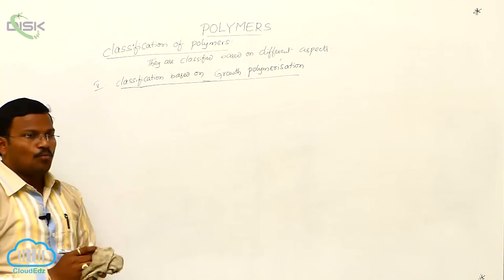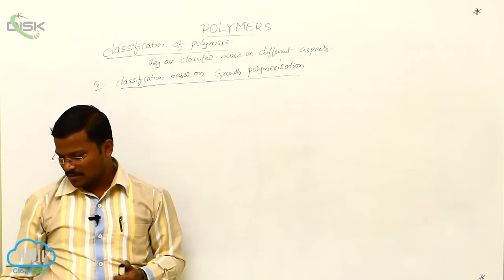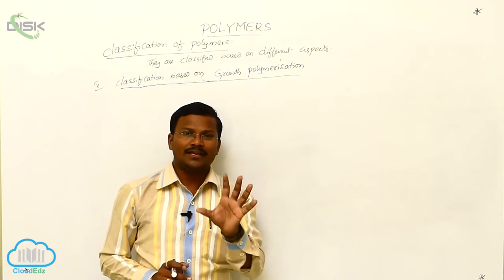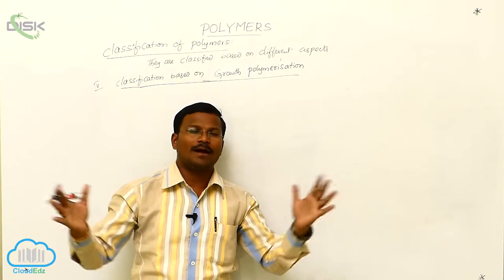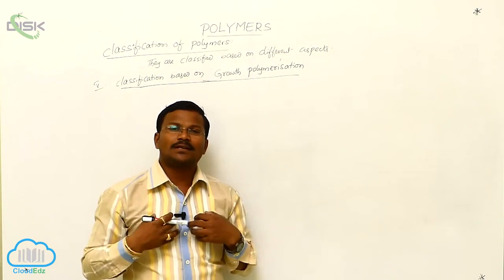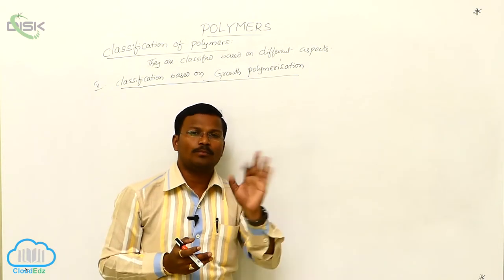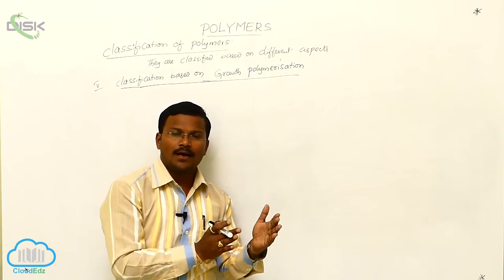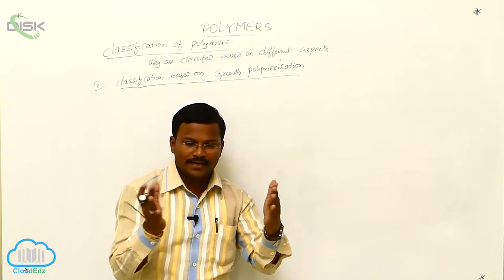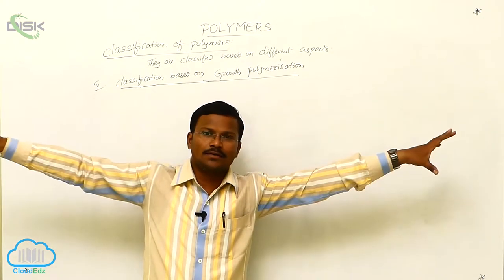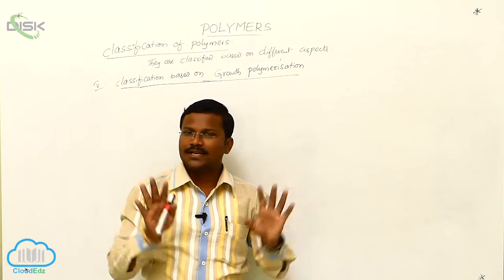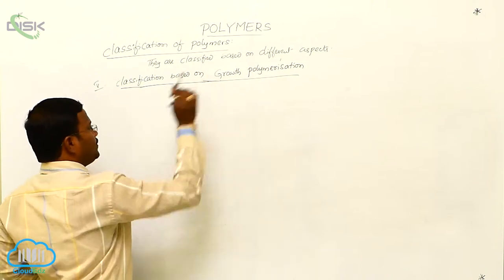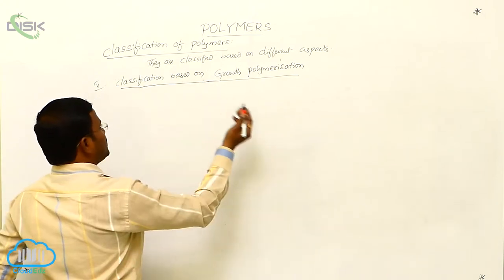When monomers react with each other — 'poly' means a large amount and 'mer' means unit — a huge number of monomers of the same or different categories bind together to produce a long chain. The resulting long chains from the polymerization of monomers are called polymers.